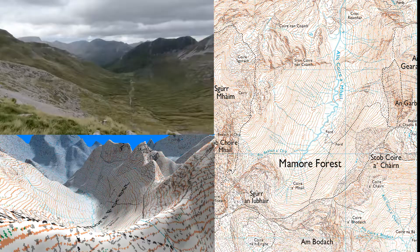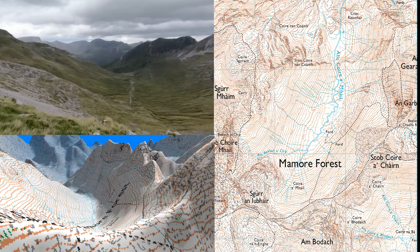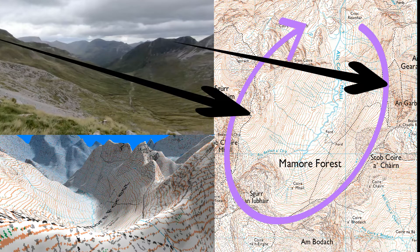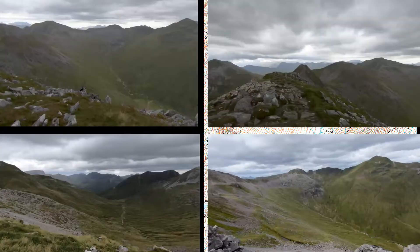If we look at the OS map you can see that clearly. You can see the shallow slopes on one side of the valley, you can see the steeper slopes, you can see the ridges all the way around with all the different peaks, and then the drop off from the other side of those peaks.